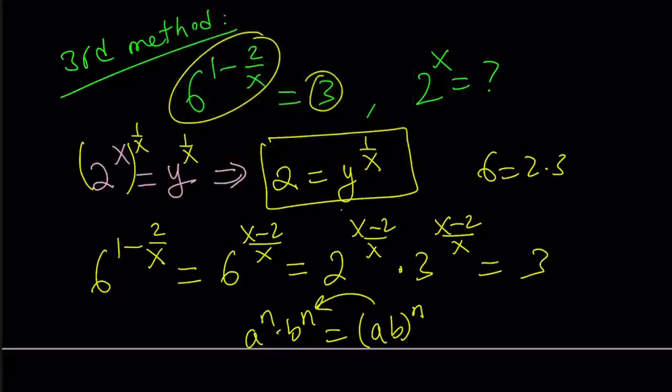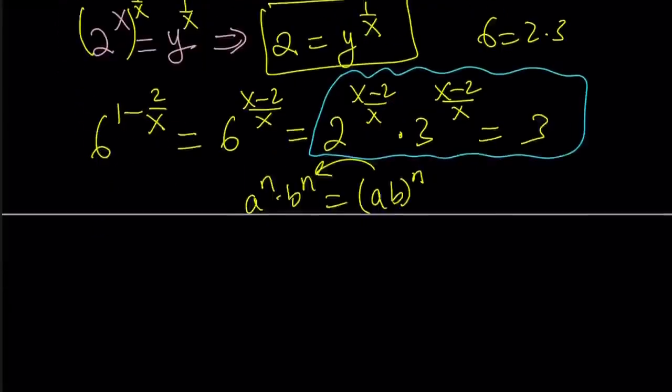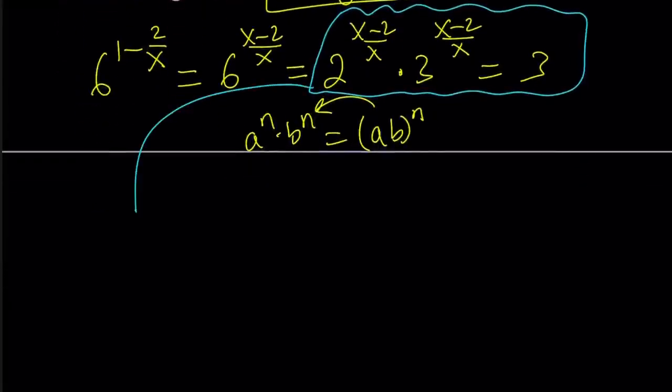We're going to take this. And guess what? We're going to put the 3's on the same side. Okay? Because they can be combined. So here's what we're going to do. To isolate 2 to the power x minus 2 over x, we're going to divide both sides by 3 to the power x minus 2 over x.